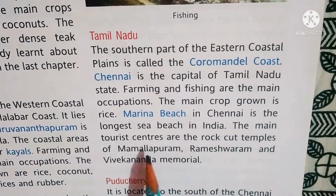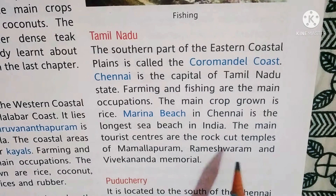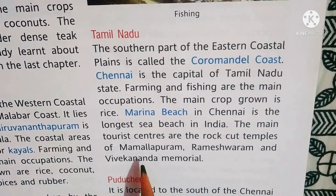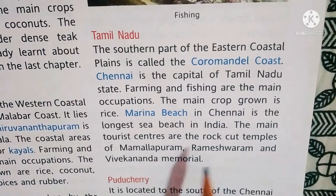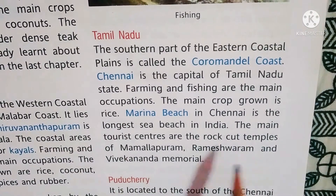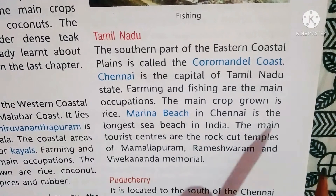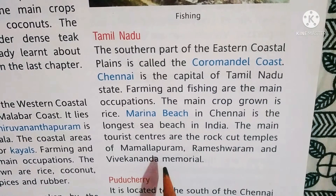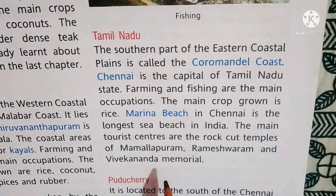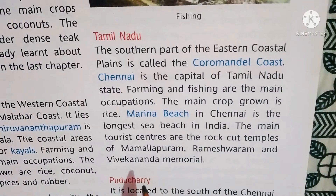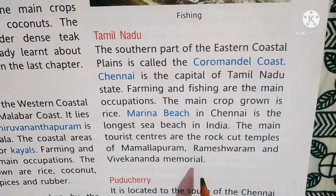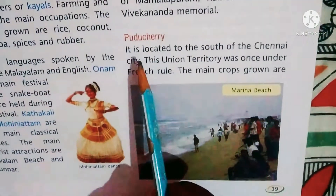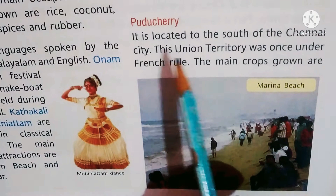The main tourist centers in Tamil Nadu are the rock-cut temples of Mamallapuram, Rameswaram, and the Vivekananda Memorial. Pondicherry is located to the south of Chennai city.